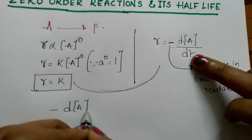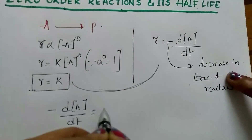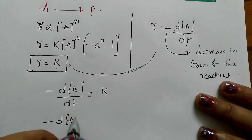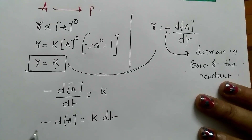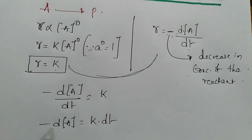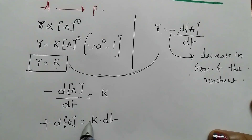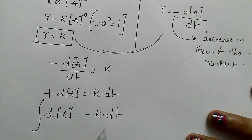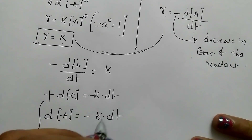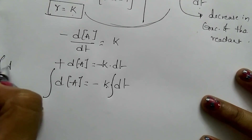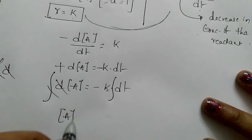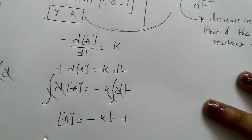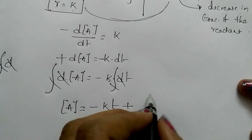Then, −d[A]/dt = K. Rearranging, −d[A] = K dt. Multiplying both sides by negative one to eliminate the minus on the left side, and then integrating both sides: since K is a constant, integration gives us [A] = −Kt + I, where I is the integration constant.